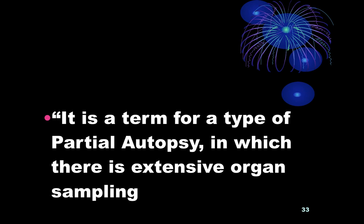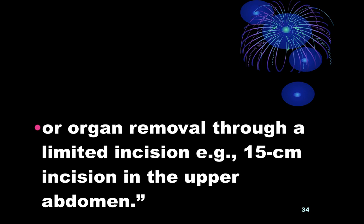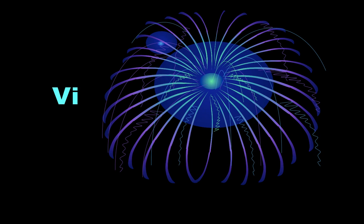Mini autopsy is the term used for a type of partial autopsy in which extensive organ sampling can be done through a limited incision on the abdomen — for example, about a 50-centimetre incision in the upper abdomen can be made for collection of viscera.